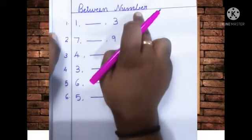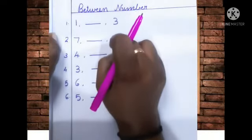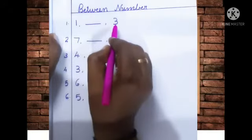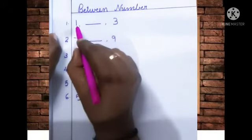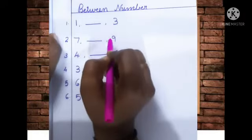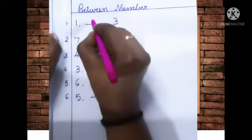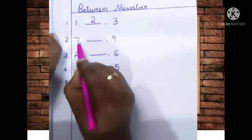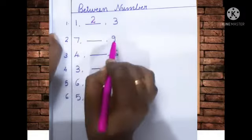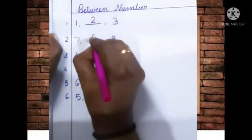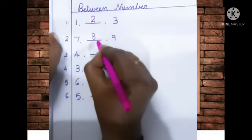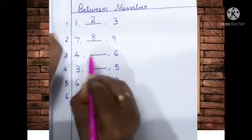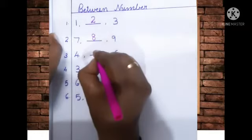Next, between number. Between number means middle number. Tell me, which number comes in between one and three? Correct — one, two, three. Two is the answer. Next, which number comes in between seven and nine? Yes, correct — eight. Seven, eight, nine. Now tell me which number comes in between four and six? Yes — five.